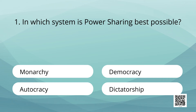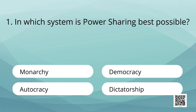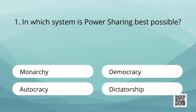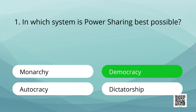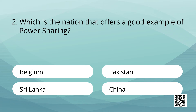Write the correct answer from the following. In which system is power sharing best possible? Options are: monarchy, democracy, autocracy, dictatorship. Answer is democracy.